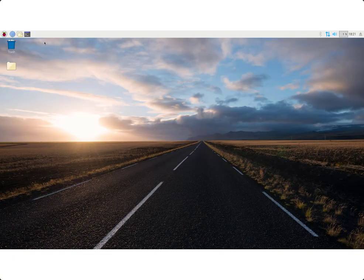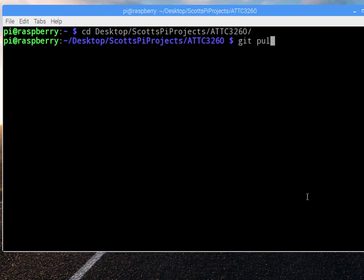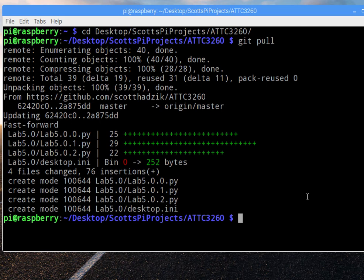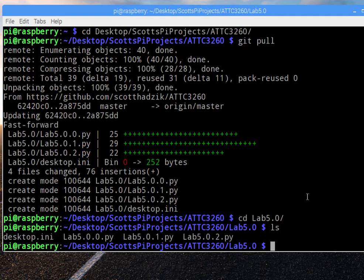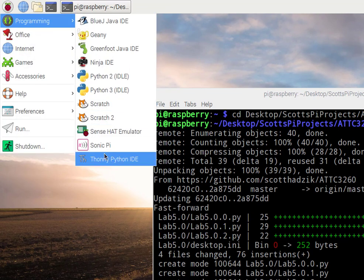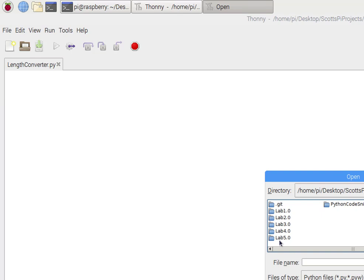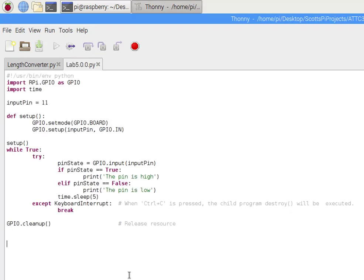Let's open a terminal and navigate to our folder. Let's do a git pull to make sure we have the most recent code. We will be working inside of lab number five. If we look in lab number five, the first code that we are going to write is lab 5.0.0. Let's open that up and see what it looks like. I'm just going to go to Thonny. So here in Thonny, let's open up ATTC 3260, then lab 5 and lab 5.0.0. This is a really straightforward piece of code.